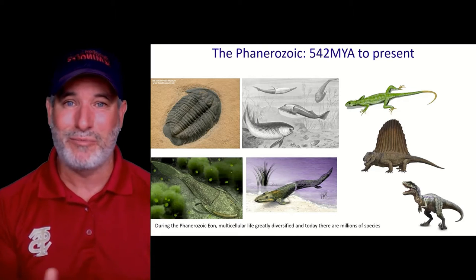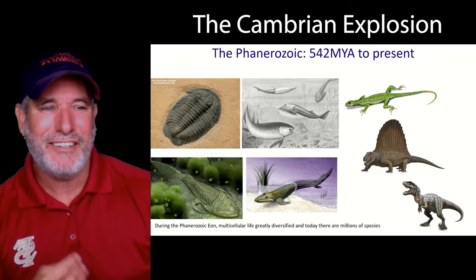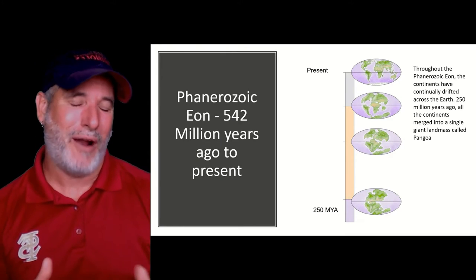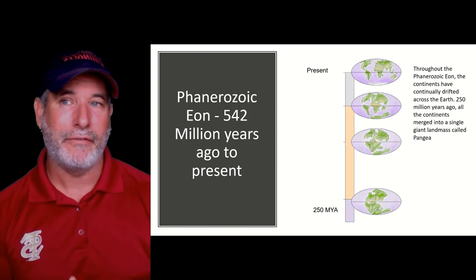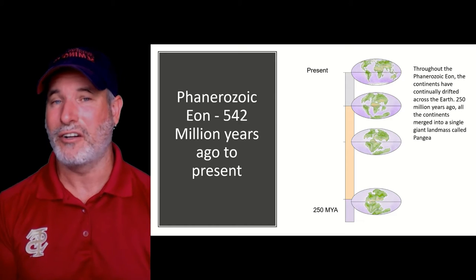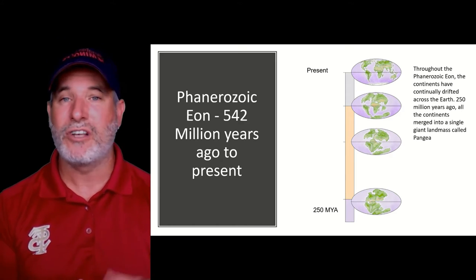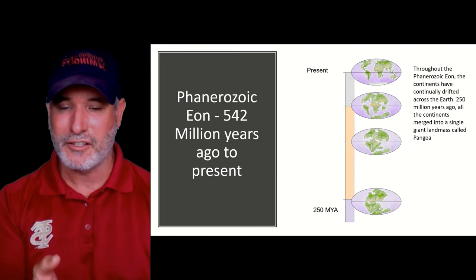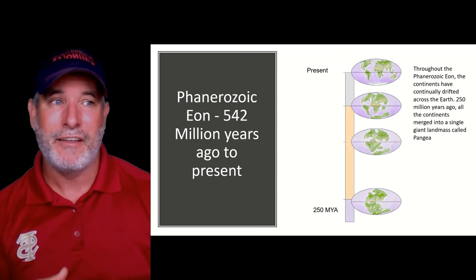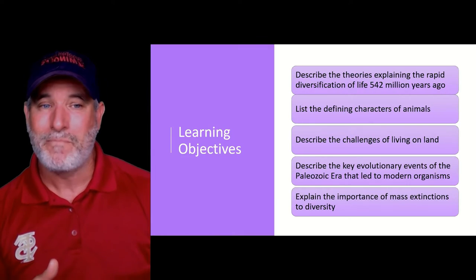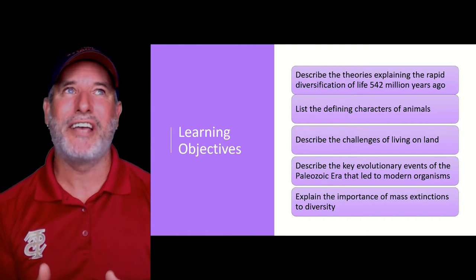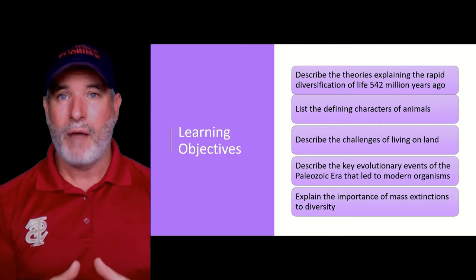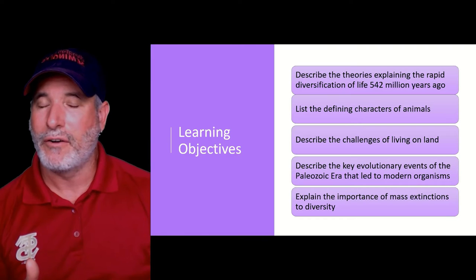The Phanerozoic Eon actually began with something called the Cambrian Explosion. Why did life really take 4.1 billion years to kind of take off? I'm going to discuss some of the theories about why life rapidly diversified in the Cambrian over 500 million years ago.